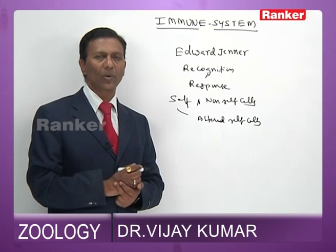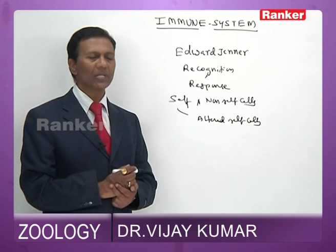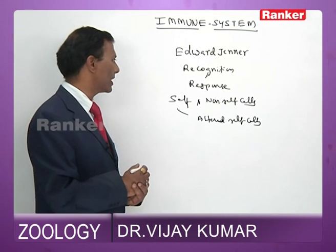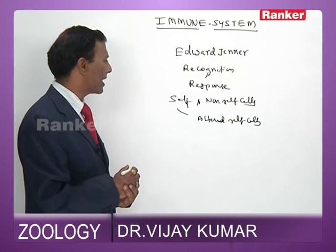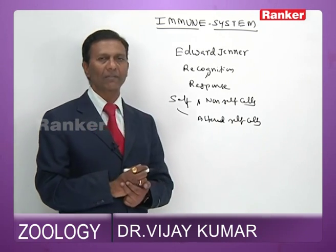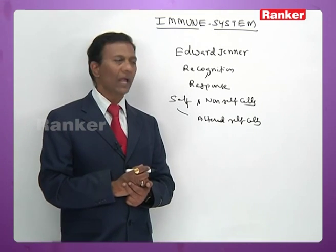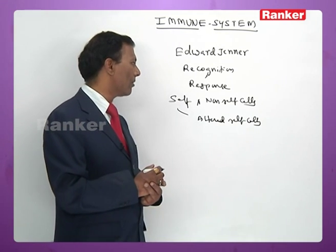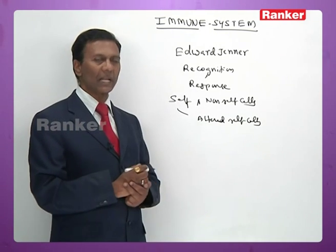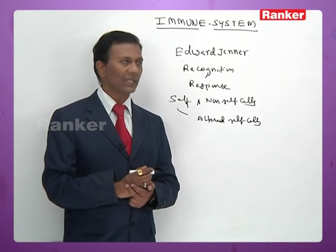The main objective of the immune system is to differentiate between self and non-self cells, and between self and altered self-cells, with subsequent elimination of non-self cells and altered self-cells.